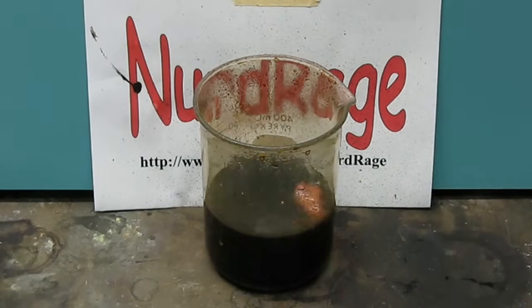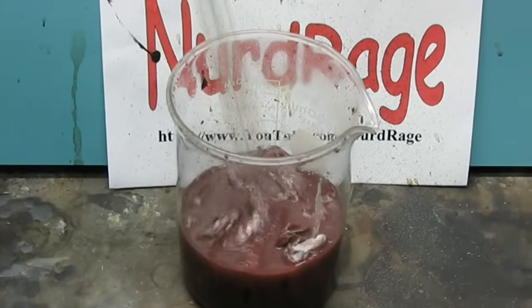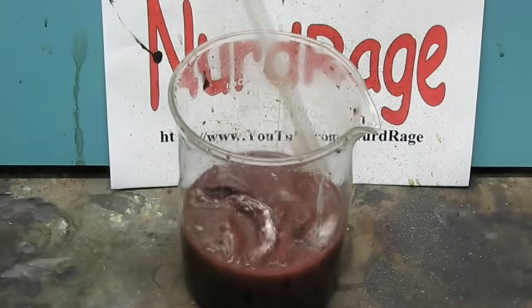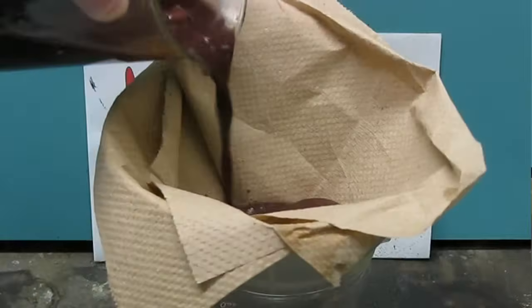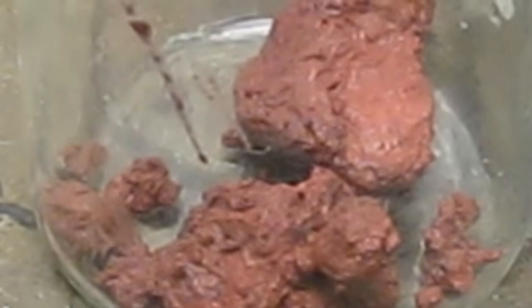Keep on adding aluminum metal until no more metal dissolves. Then take out all the extra aluminum bits and filter off the mixture. The solid product is copper. It's highly contaminated with aluminum metal but it's still very usable to make more nitric acid.